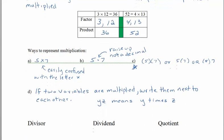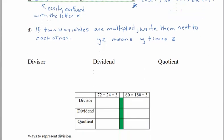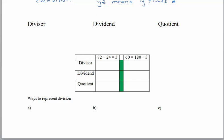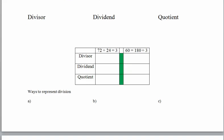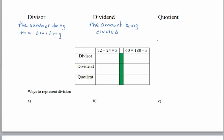Let's move on to the different parts of a division problem. In a division problem we have three parts: the divisor, the dividend, and the quotient. The divisor is the number doing the dividing. The dividend is the amount being divided. And the quotient is the answer.